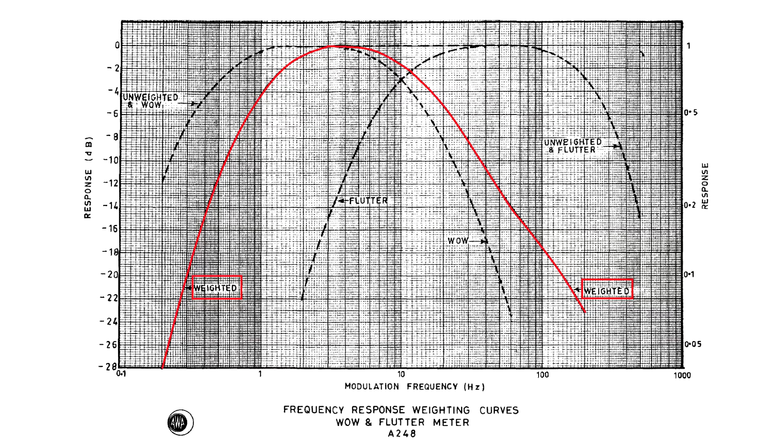Specifications for playback and recording machines usually provide a number corresponding to the combined weighted Wow and Flutter. This response curve is skewed towards lower frequencies, that is, it is more sensitive to Wow than to Flutter.